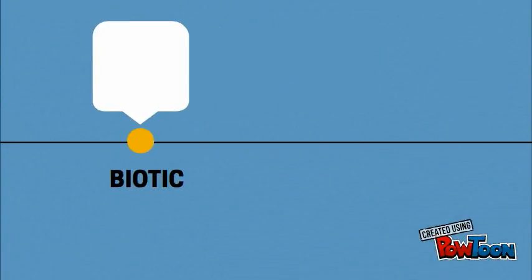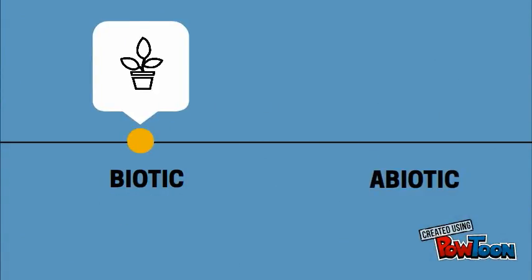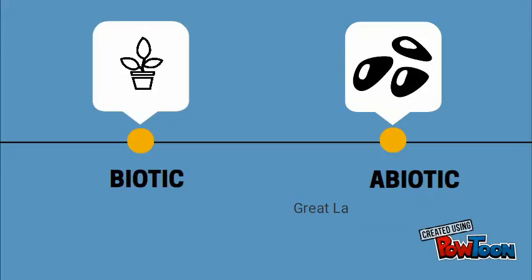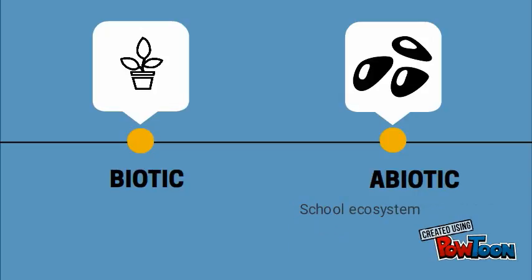Ecosystems have biotic and abiotic communities. The abiotic components are the inorganic or non-living components. This would be rocks, water and the like for the Great Lakes ecosystem, while for the school ecosystem this includes buildings and the grounds.